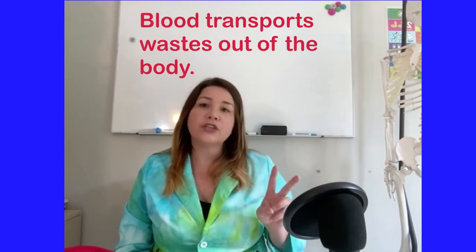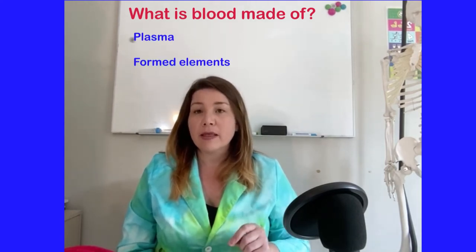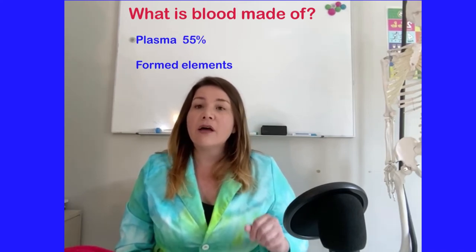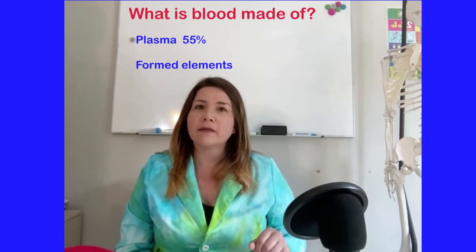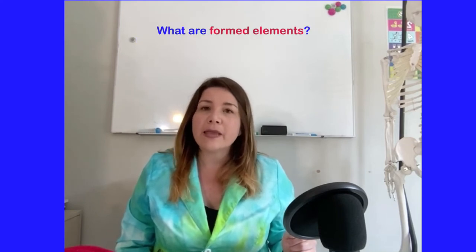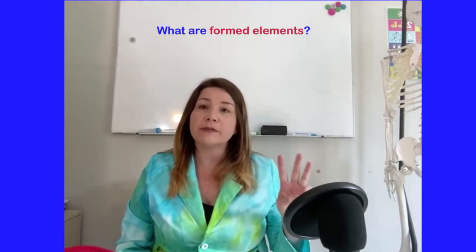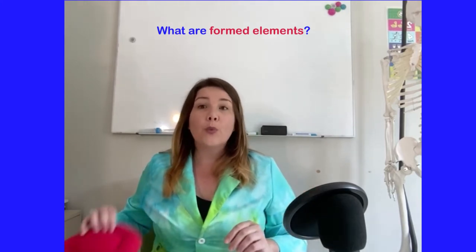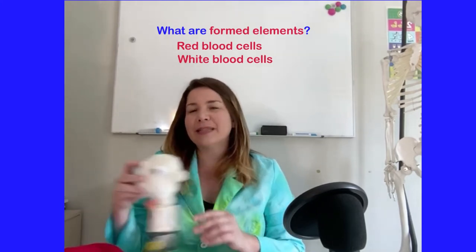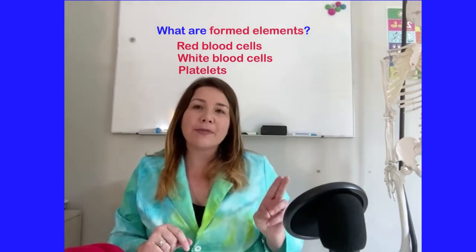Blood is made of two things: plasma and formed elements. Plasma makes up about 55% of the blood, and the other 45% are the formed elements. Formed elements means anything that is formed — these include three different types of cells: red blood cells, white blood cells, and platelets.